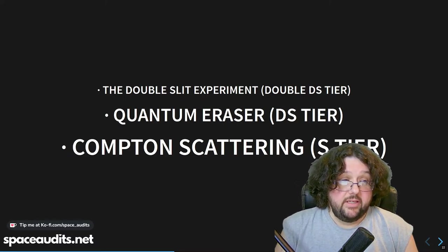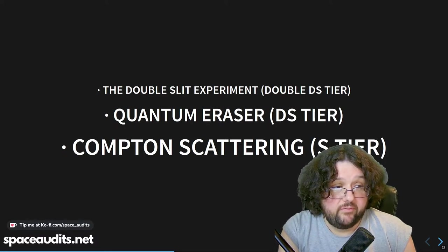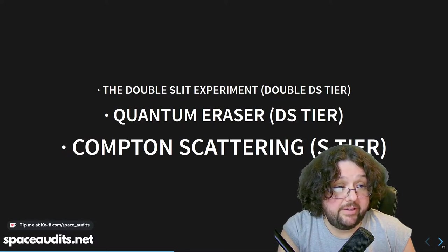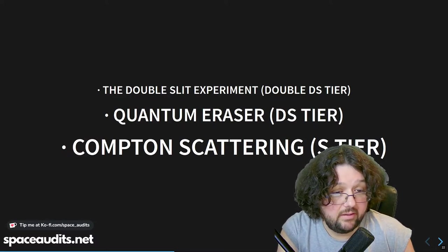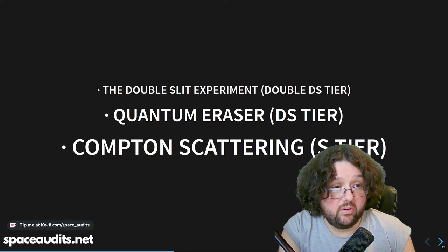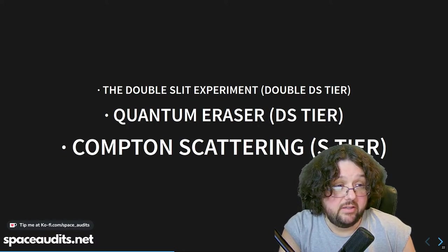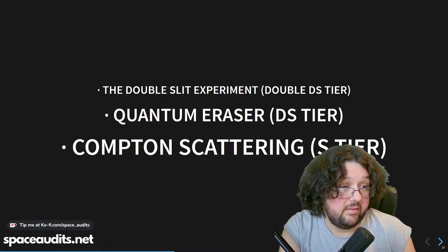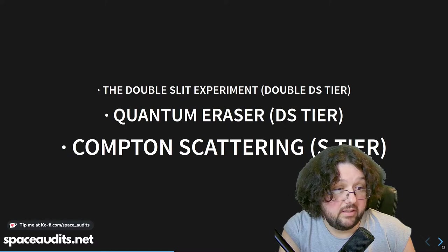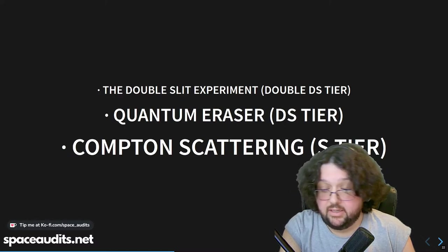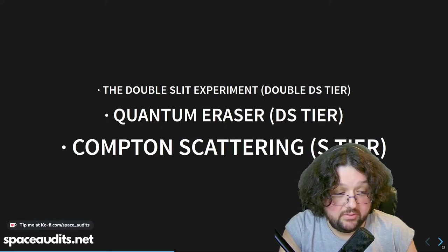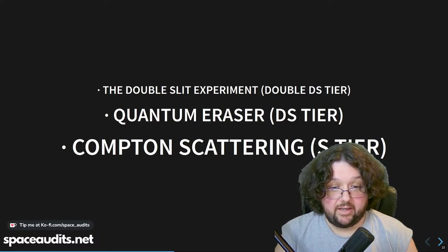Now we'll get into experimental evidence for the quantization of the photon, starting with Einstein's work. This is a tier list: Double-D tier for the double-slit experiment, Double-D tier for the quantum eraser experiment, and S tier for quantum scattering — the Compton effect — and we'll get into why it's rated this way.